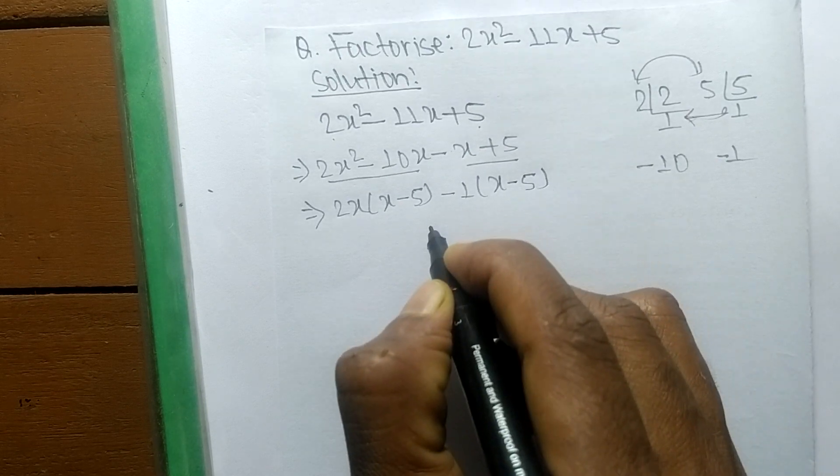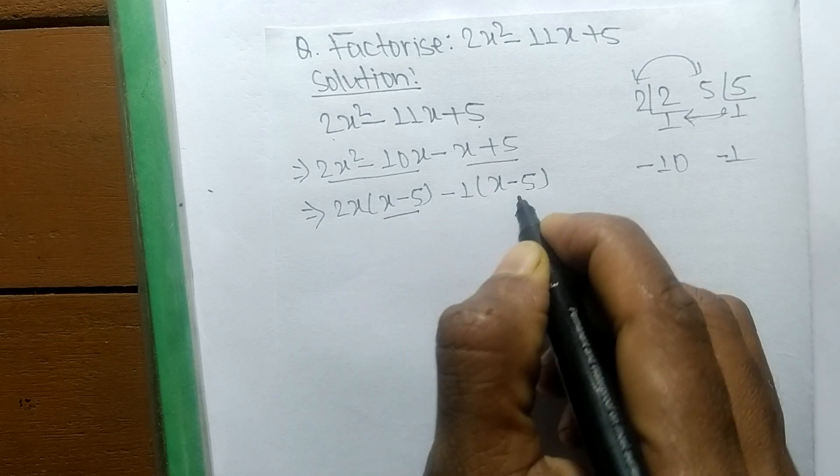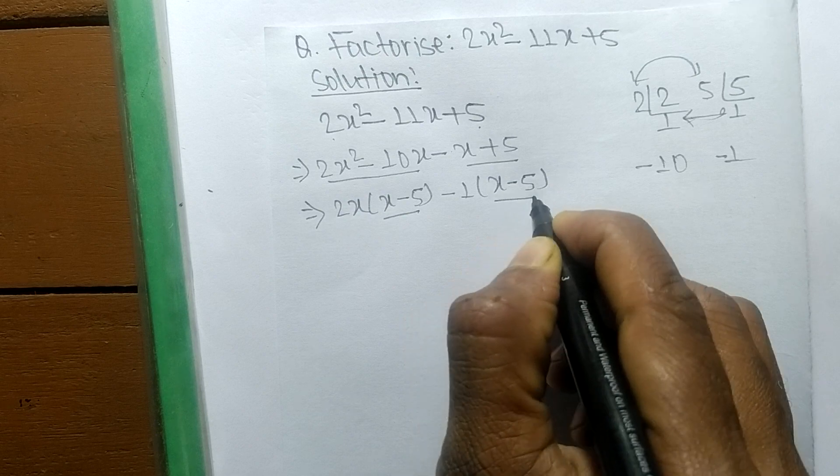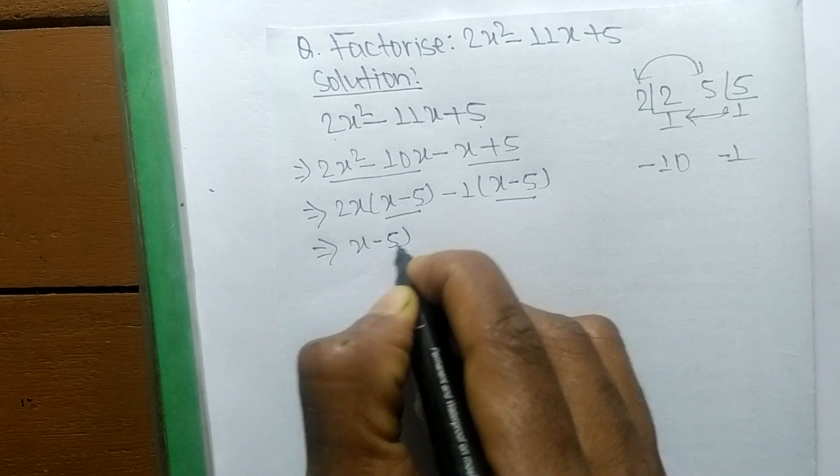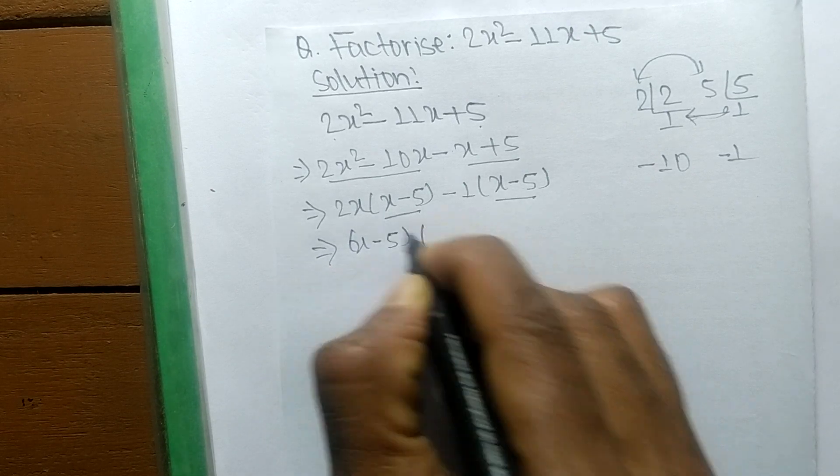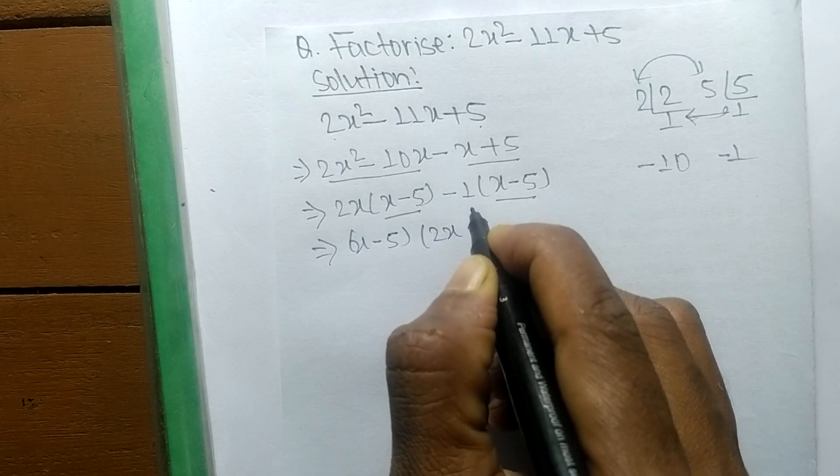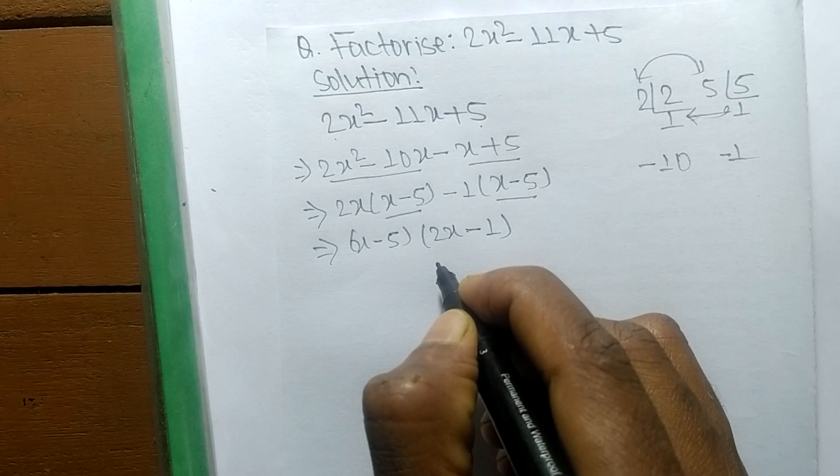We can take x - 5 as common. So the remaining in the first part is 2x, and in the second one remaining is minus 1.